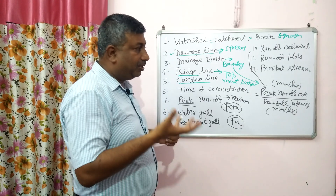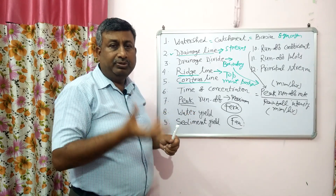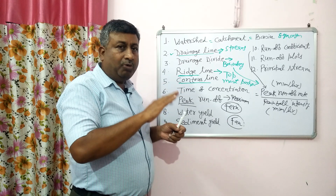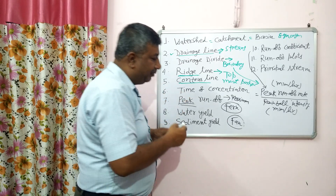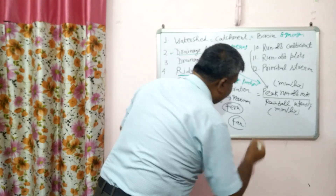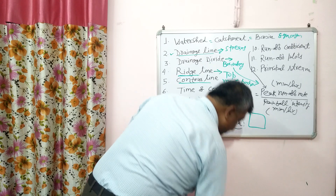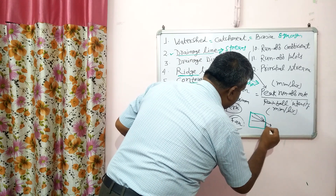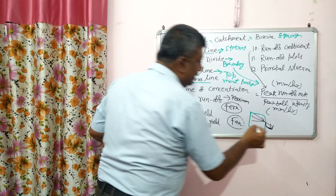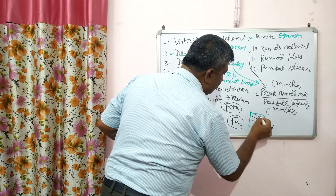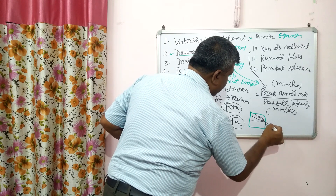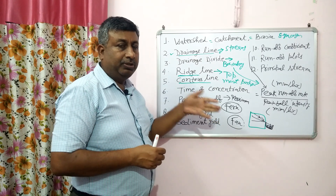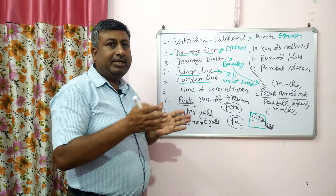Runoff plots are plots where runoff water is collected to estimate soil erosion. In the field, all water drains to one point and is collected there. The soil transported with the runoff water is stored and weighed. Such plots used to calculate soil erosion are known as runoff plots.